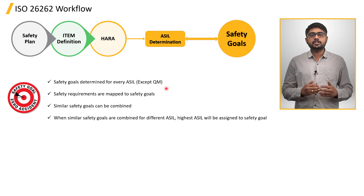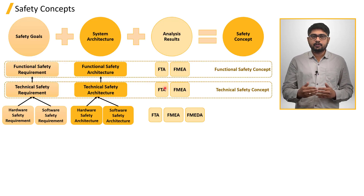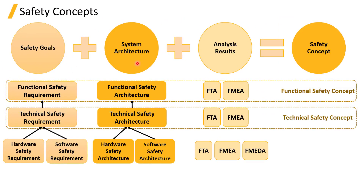The combination of safety requirements, safety architecture, and outcomes of safety analysis — these three together form the safety concept. Part 3 of ISO 26262 emphasizes the safety concept at functional level, while part 4 focuses on the technical level.